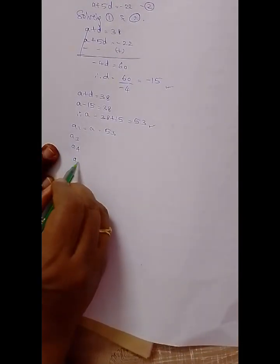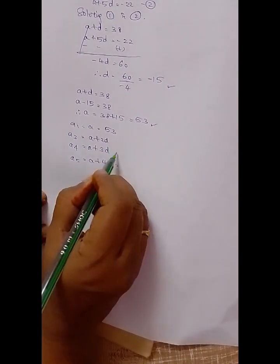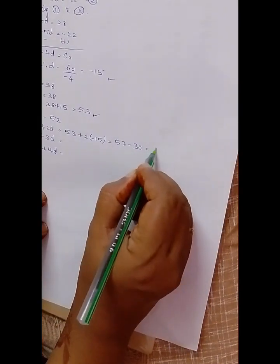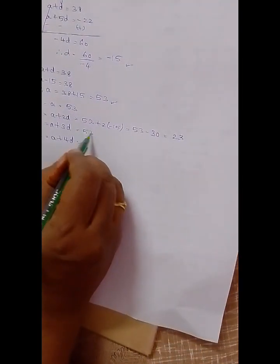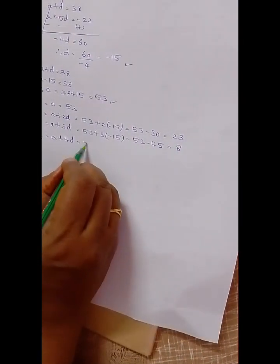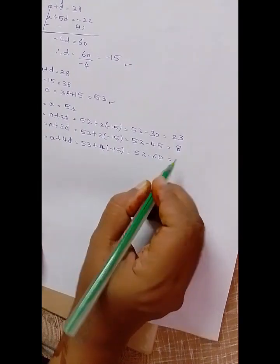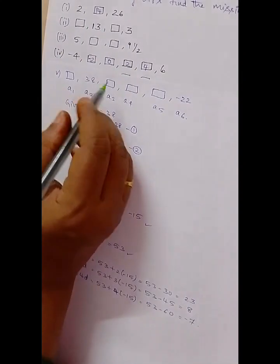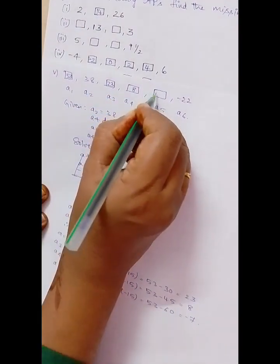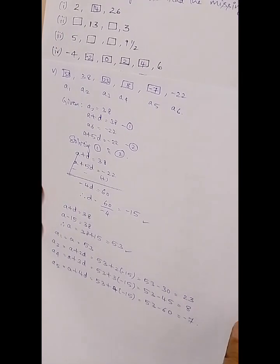Now: a1 = 53. a3 = a + 2d = 53 + 2(-15) = 53 - 30 = 23. a4 = a + 3d = 53 - 45 = 8. a5 = a + 4d = 53 - 60 = -7. So the complete sequence is: 53, 38, 23, 8, -7, -22. I hope you have understood. Kindly like, share, and subscribe. Thank you, have a nice day!